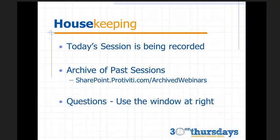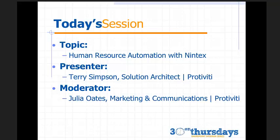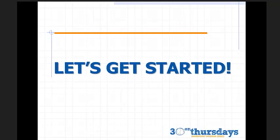During today's presentation, please insert all questions in the question window in your GoToMeeting panel — that should be at the right of your screen — and we will try to save all the questions to the end. Today's topic is Human Resource Automation with Nintex. Today's presenter is Terry Simpson, Solution Architect at Protivity. I am Julia Oates, Marketing and Communications for Protivity, and I will be moderating today's session. So let's get started — I'm going to turn it over to Terry and he will show you a little bit more about Nintex.